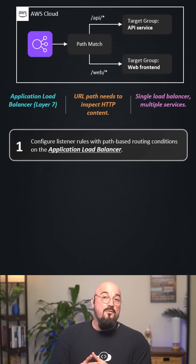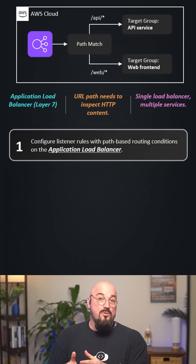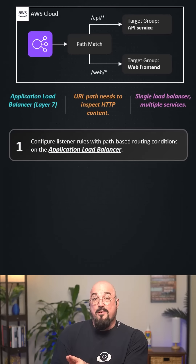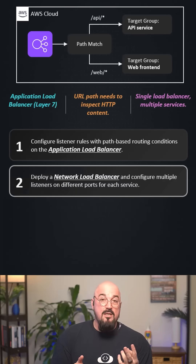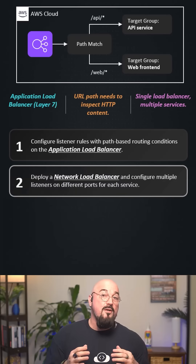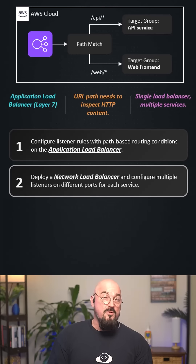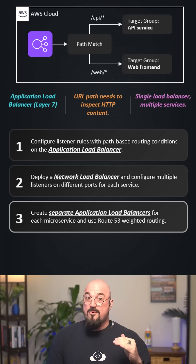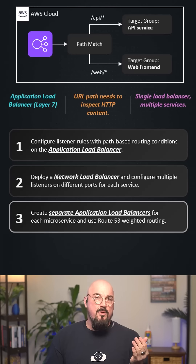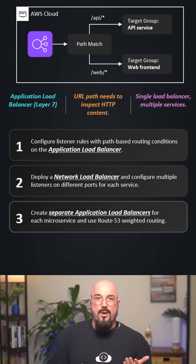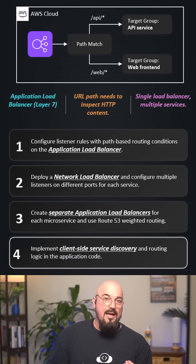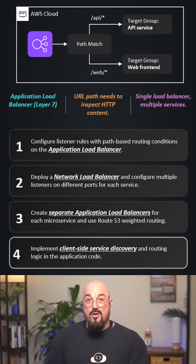Option one: configure the listener rules with path-based routing conditions on the application load balancer. Option two: deploy a network load balancer and configure multiple listeners on different ports for each service. Option three: create separate application load balancers for each microservice and use Route 53 weighted routing. Option four: implement client-side service discovery and routing logic in the application code.